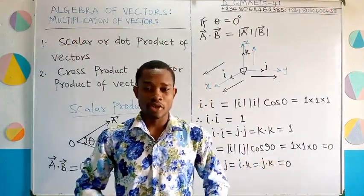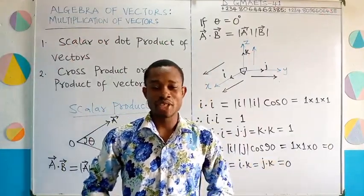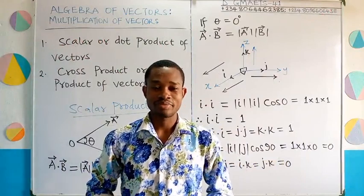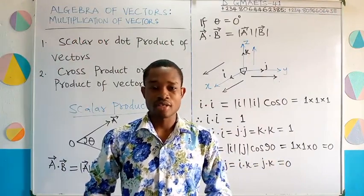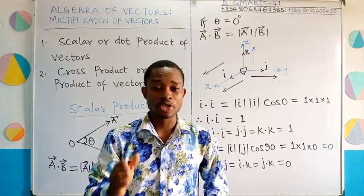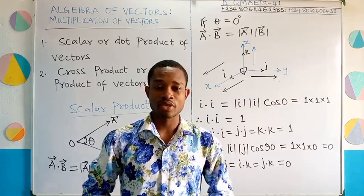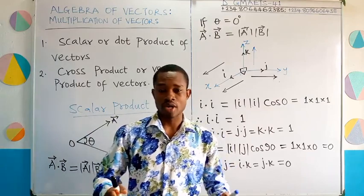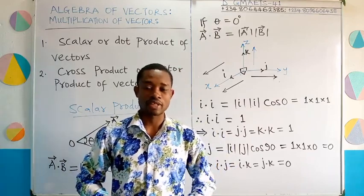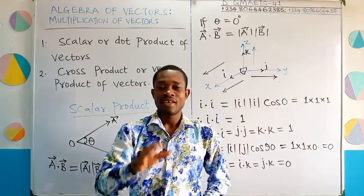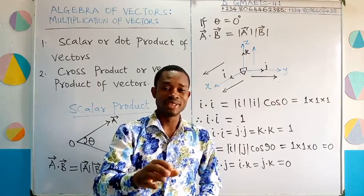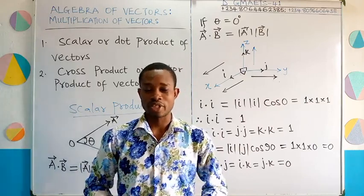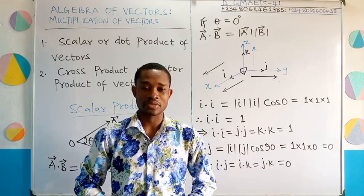This is GMAT41. Welcome to a class on vectors. In our previous class, I introduced you to the algebra of vectors and taught you how to add or subtract two or more vectors. In this class, I'll be teaching you another form of algebra of vectors, which is multiplication of vectors.